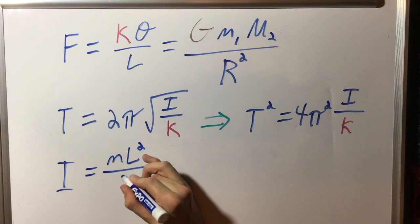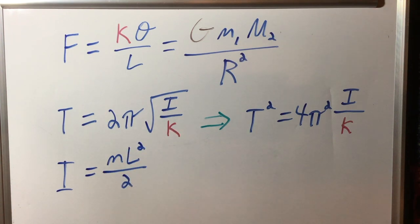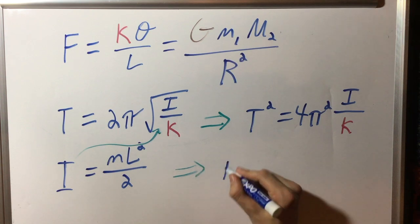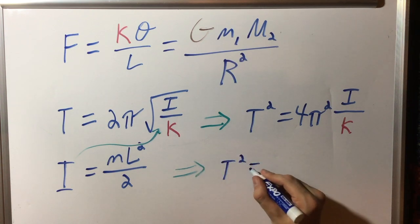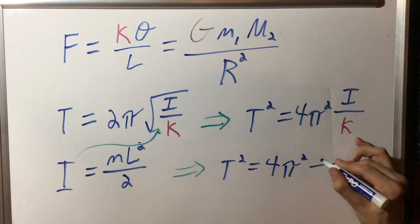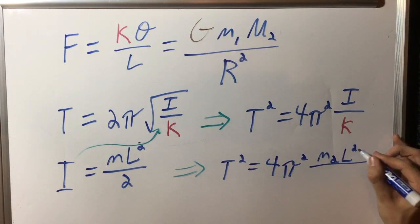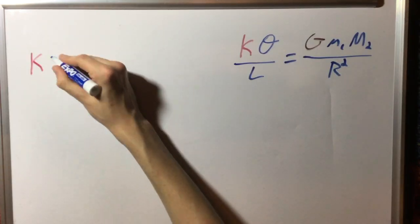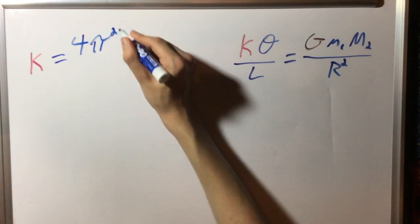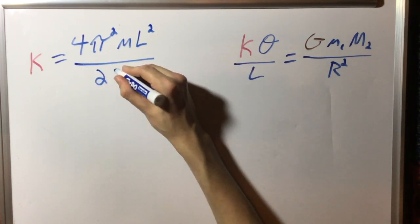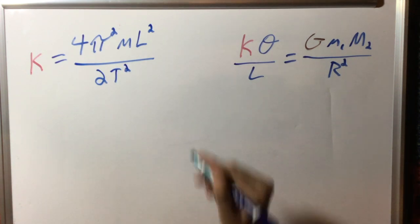Substituting this back into the previous equation, we get T squared is equal to 4 pi squared times the quantity of M2L squared over 2 kappa. Now, isolating kappa, we get kappa is equal to 4 pi squared times the quantity of ML squared over 2T squared.